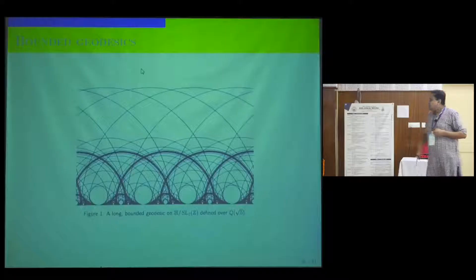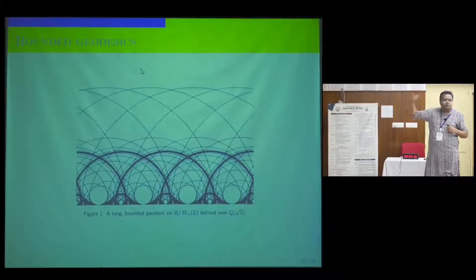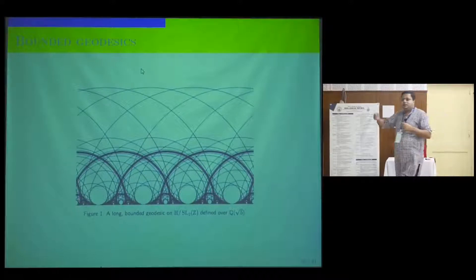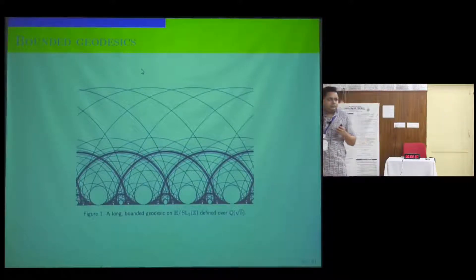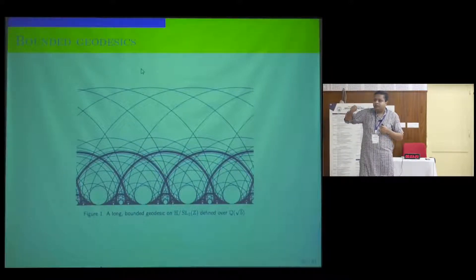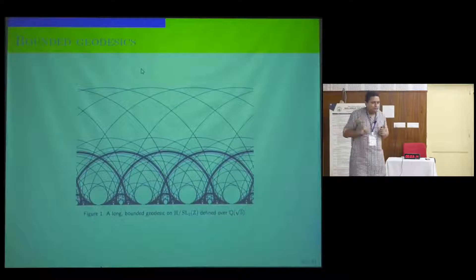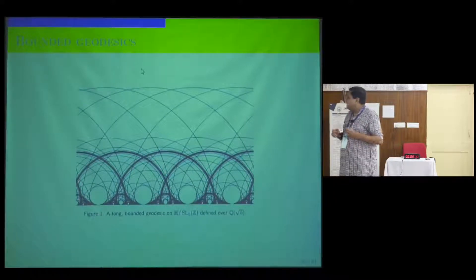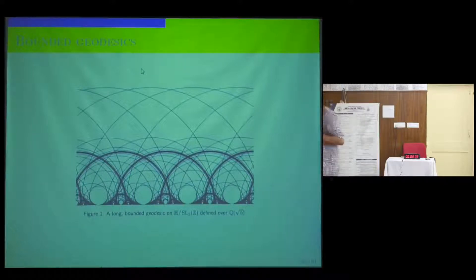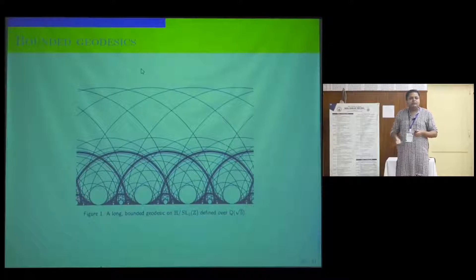One of the nice things about ergodic theory is that it allows us to take one of these badly approximable numbers and associate to it a point on the three-manifold, uniquely — and when we move that point on the three-manifold, we can model the process of getting good rational approximations to the real number. It provides a geometric model for studying good approximations. A bounded geodesic on that disk corresponds to a badly approximable number: if the geodesic stays in a compact part and never goes off to infinity, that happens if and only if the starting point is a badly approximable number.